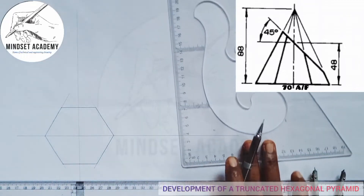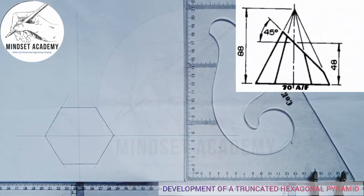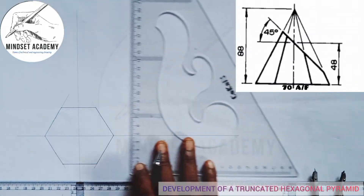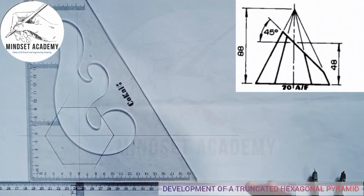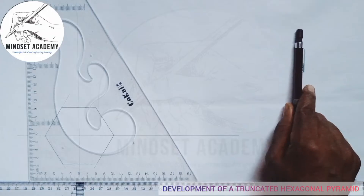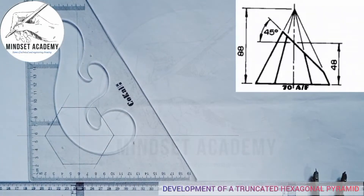This is across flat where the sides of the hexagon are touching the circumference of the circle. A hexagon is a polygon bounded by six equal lines. If you want to understand more on how to construct a hexagon across flat, you can click the link at the top right corner of the screen.